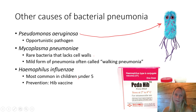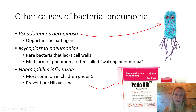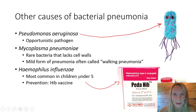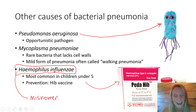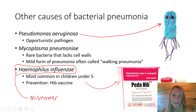Haemophilus influenzae is preventable by the Hib vaccine — one of the childhood vaccines. It is found in children under five and puts them at risk for both bacterial pneumonia and bacterial meningitis. Importantly, Haemophilus influenzae is not the cause of influenza — this is what we call a misnomer. Scientists made an error in naming it: influenza, or the flu, is caused by the influenza virus, not this bacterium.